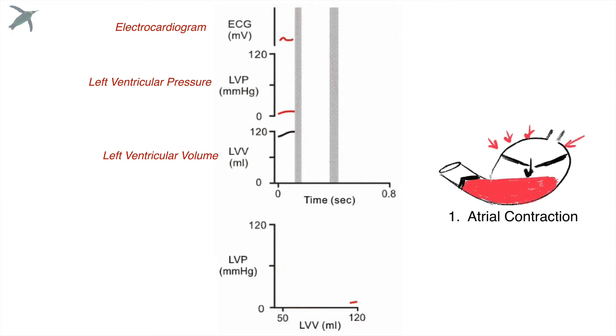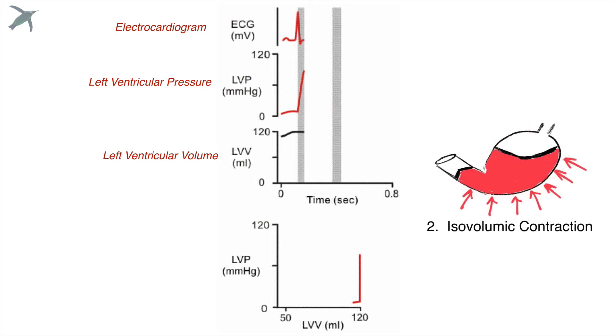We're going to start with atrial contraction because we start with the P wave of the ECG at the top. You notice that the left ventricular volume is already maxed out. It's already full. But the pressure is very low. Now with this isovolumic contraction, we've got an increase in pressure, but the volume stays the same. We're building the pressure so we can power the blood through the whole body. That corresponds with the QRS complex of the ECG.